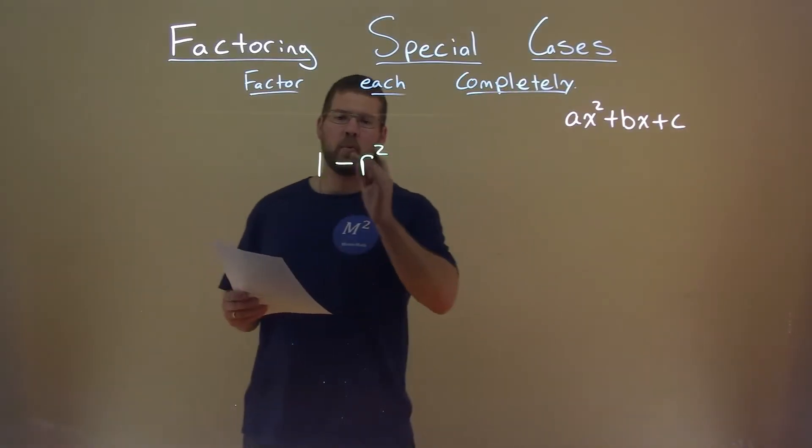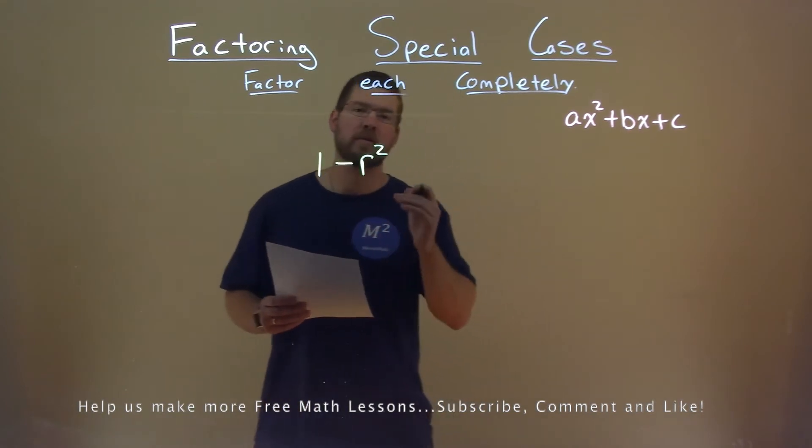We're given this problem right here, 1 minus R squared, and we want to factor this completely.